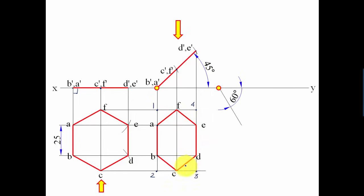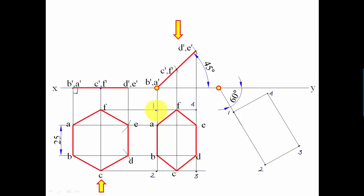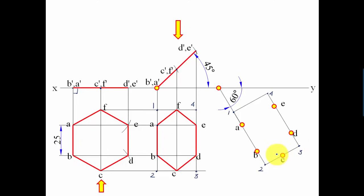Draw the 60-degree angle and fit the same rectangle — points 1, 2, 3, 4 — in that orientation. Then use the compass: keep one leg at point 1, the other at A, and cut an arc to get point A. Similarly use the distance 2-to-B with center 2 to get point B, and 2-to-C with center 2 to get point C. Work out all remaining points the same way, join them in sequence, and there is the hexagon with AB inclined at 60 degrees.